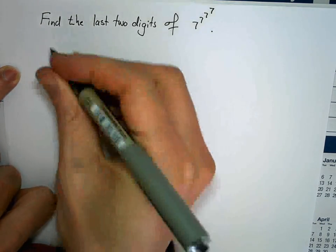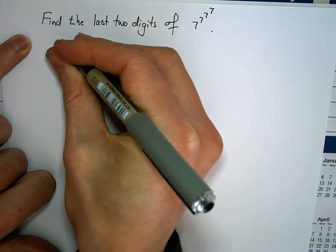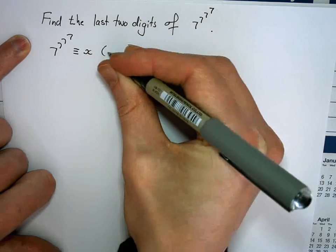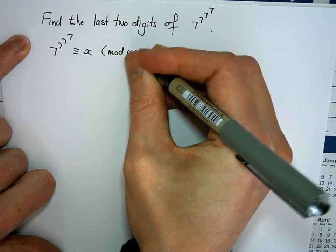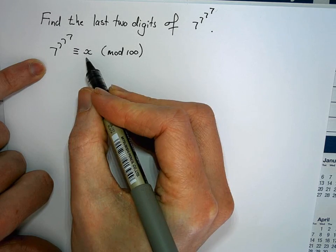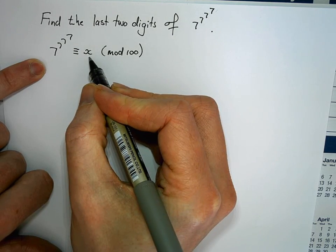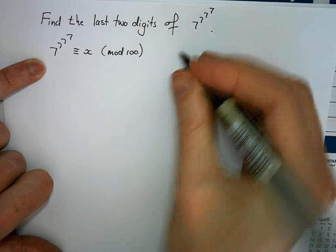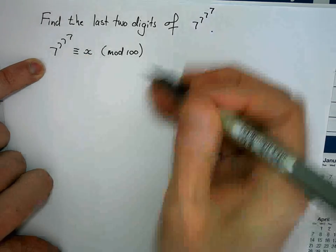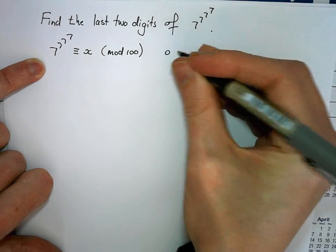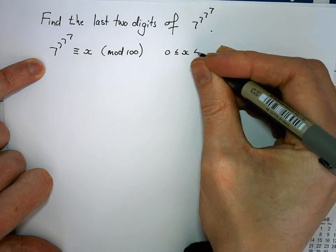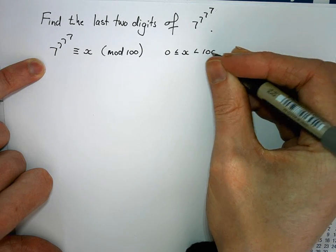What I'm going to do is reformulate this as solving a congruence. I want a number x that is congruent to this number modulo 100. Of course there are infinitely many x's which satisfy this congruence, so I'm interested in the unique x which is the remainder after division by 100. I need to constrain this further: x needs to lie between 0 and strictly less than 100.